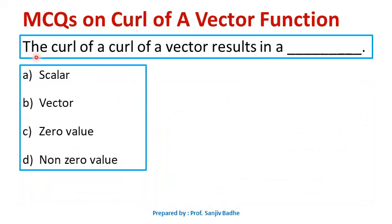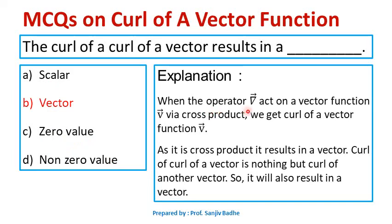Next question: the curl of a curl of a vector results in — options are scalar, vector, zero value, non-zero value. When the del operator acts on a vector function via cross product, we get the curl of that vector function. A cross product results in a vector, and if you take the curl of that vector, it will also be a vector because it is also a cross product. Therefore, curl of a curl of a vector results in a vector. So B is the correct option.